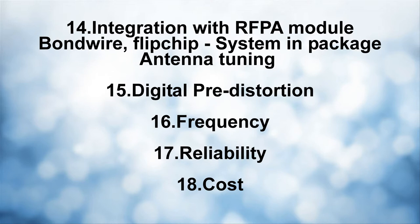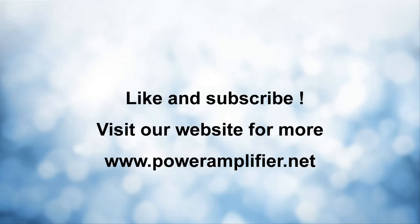Reliability and cost are also important considerations. The point of this tutorial is that in a very short time we have counted a large number of parameters — about 18 — and there are many other system and circuit parameters which also need to be considered. This gives an idea of how high the system complexity of envelope tracking really is. For more detail on this topic please visit our website at www.poweramplifier.net, where similar RF and analog IC design topics are discussed. Thank you very much.